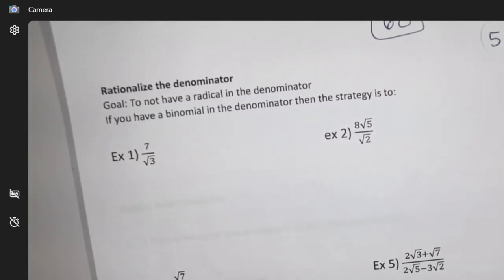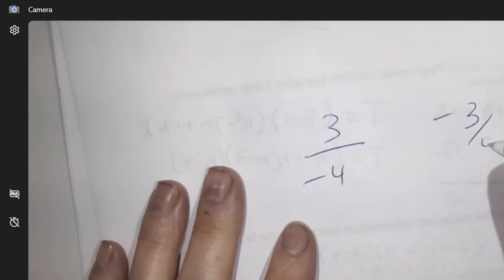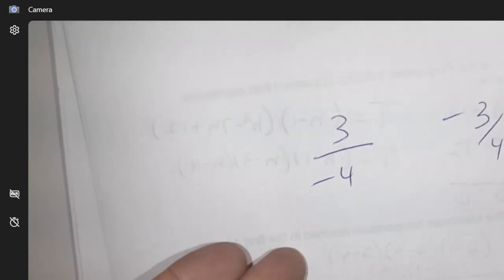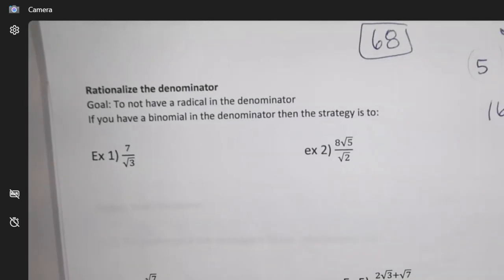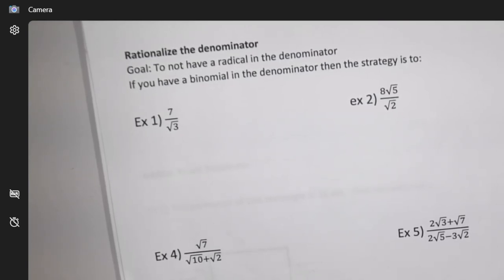Okay, rationalizing the denominator. The topic just means in math you're really not supposed to have roots on the bottom, just like how I've said in the past something like negative four on the bottom - I would just make it negative three-quarters instead. That's just kind of a math rule about writing stuff. This would be the same thing.